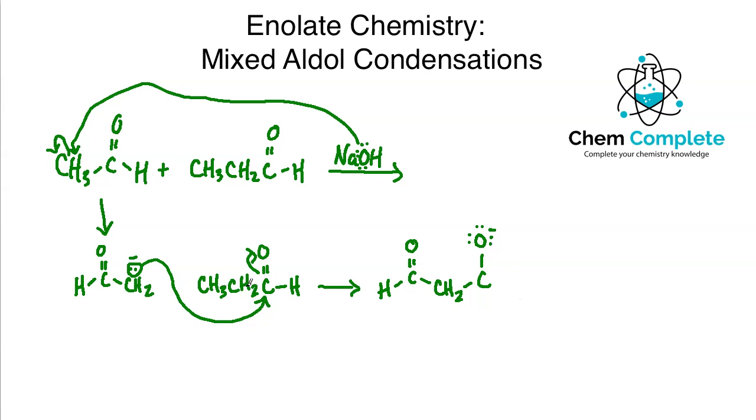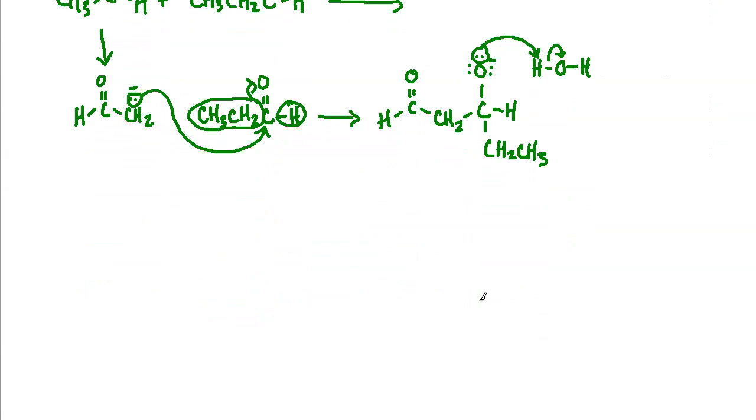After the enolate attacks, we would still have the aldehyde portion here. Here's the CH2 that was part of the enolate that attacked a carbon that was a carbonyl. Now that carbonyl has opened up and has become a tetrahedral intermediate here with the O minus. And then let's take a look at what I have here. I've got an ethyl group and I have the aldehyde proton.